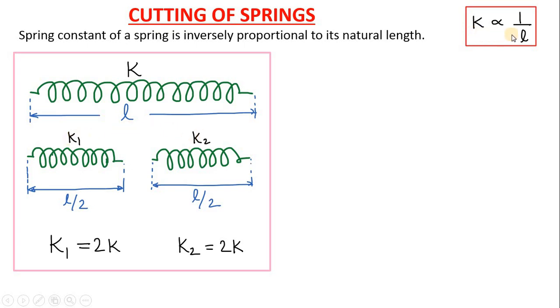As the spring constant is inversely proportional to length, so when the length will become half, then spring constant must become double. That is why K1 is 2 times of K and K2 is 2 times of K.